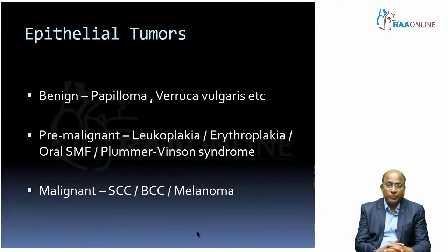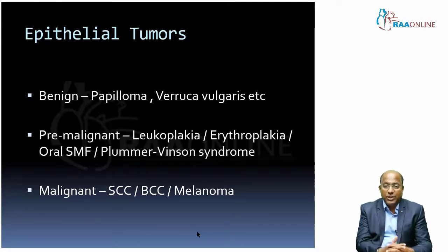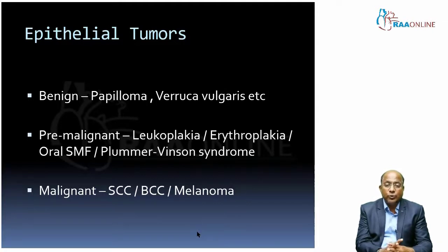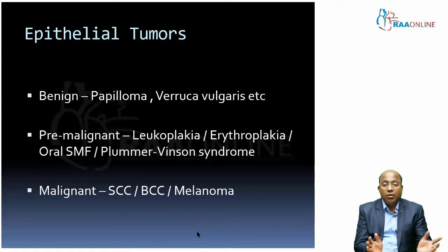For epithelial tumors, you have benign, pre-malignant — now termed potentially malignant — and malignant categories. In benign, we have papilloma, verruca vulgaris, etc. In potentially malignant, we have leukoplakia and erythroplakia, with erythroplakia being much more potentially malignant than leukoplakia, along with oral submucous fibrosis. Earlier, there was a distinction between pre-malignant conditions and pre-malignant lesions — leukoplakias and erythroplakias were pre-malignant lesions, whereas oral submucous fibrosis and Plummer-Vinson syndrome were pre-malignant conditions.